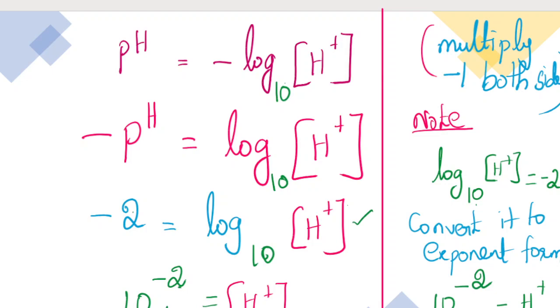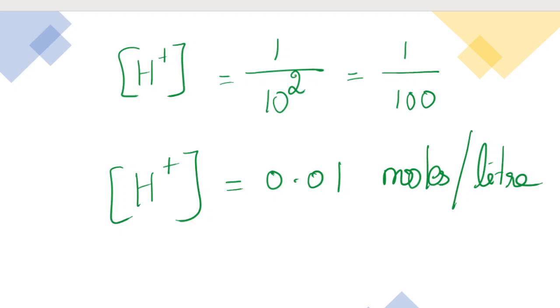So, h plus is 10 power minus 2. So, in this 10 power minus 2, what do you mean? 1 divided by 10 power 2. What do you mean by 10 power 2? So, 10 power 2 is 100. So, 1 by 100, what do you mean by 10 power 2? 0.01. So, in concentration, this is the moles per liter.